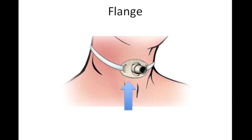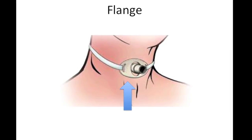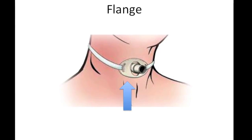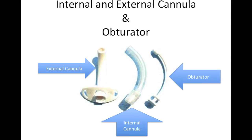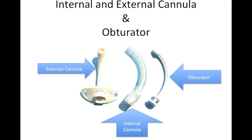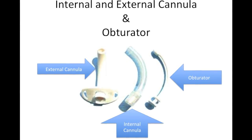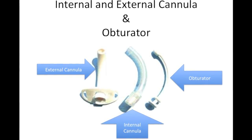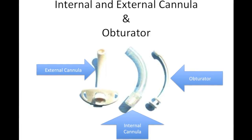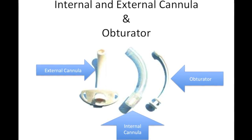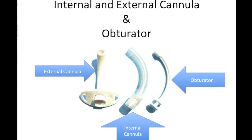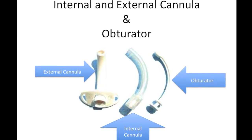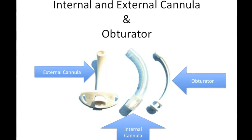The neck flange has holes on either side for securing neckties. These neckties will keep the tracheostomy tube in place. The external cannula is the tube that is inserted into your windpipe. It stays there all the time and may have another part called the internal cannula that slides inside of it. The internal cannula is removed for cleaning or replacement. Lastly is the obturator, which is used as a guide to insert the tracheostomy tube.